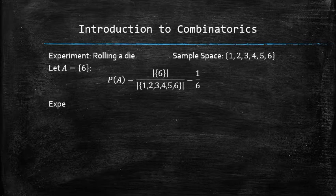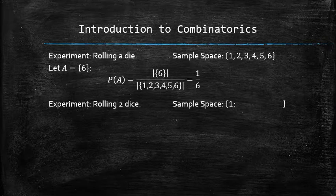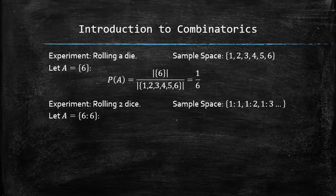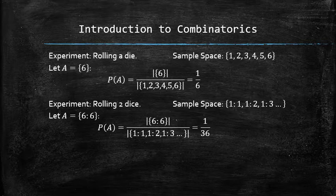Now let's consider the experiment of rolling 2 dice with the well-known sample space. Let A be an event in which the outcome is a double 6. To find the probability of A, we divide the number of outcomes in the event by the size of the sample space, which is equal to 1 over 36.